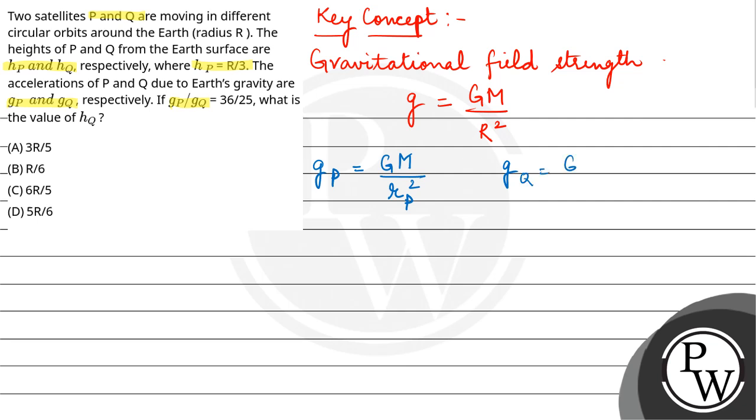And if we talk about Q satellite, that will be equal to GM upon RQ square, where R is equal to radius of earth plus height H.